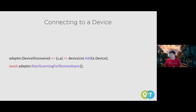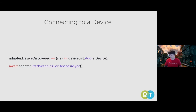Connecting to a Bluetooth device is easy. Once you have your Bluetooth adapter as a global variable, you just call adapter.ScanForDevices(), and when it discovers one, you add it to a list of devices.